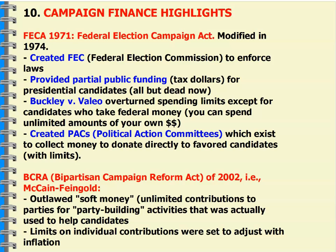Buckley v. Vallejo — a 1976 case — said if you are rich and have lots of money, you can spend it on your own campaign, as Donald Trump did. It said yes, if it's your money or your spouse's — not your kids, not your grandkids, not your parents — and you want to spend it on a campaign, go right ahead. That's your free speech rights. That essentially opened the floodgates to people spending money in their own campaigns.